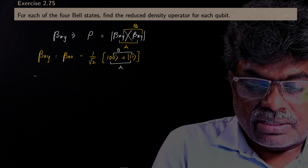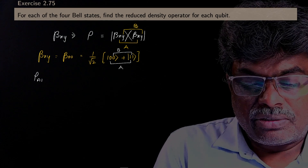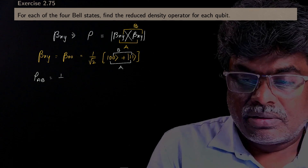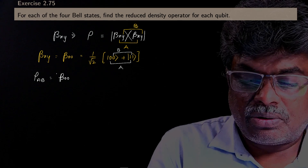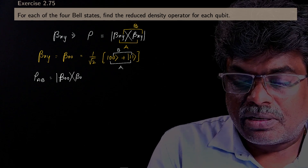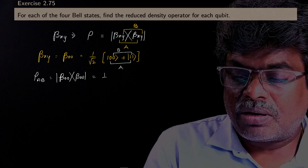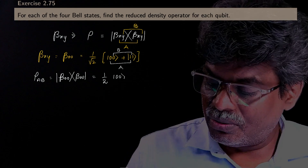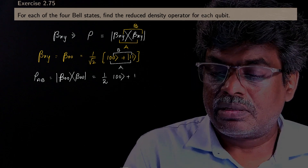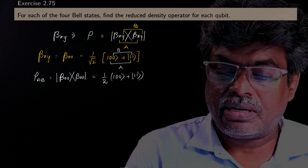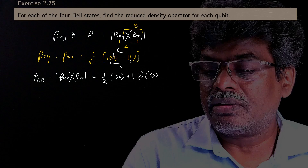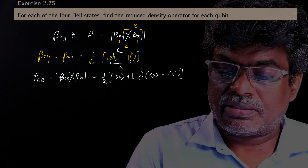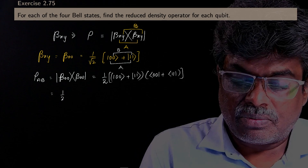Now I am going to find the density operator corresponding to the composite system AB, which is nothing but (1/2)(|00⟩ + |11⟩)(⟨00| + ⟨11|). Let us multiply this.